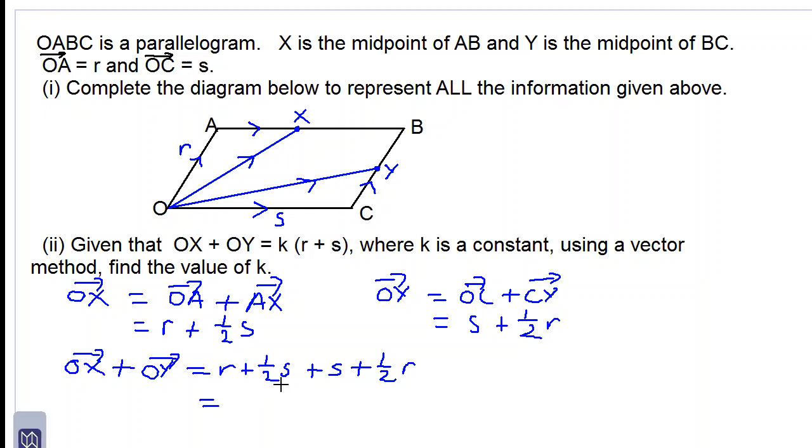So one half s plus one s is one and one half s, which is three over two s, plus one half r plus one r is three over two r. This is the same as three over two r plus three over two s.